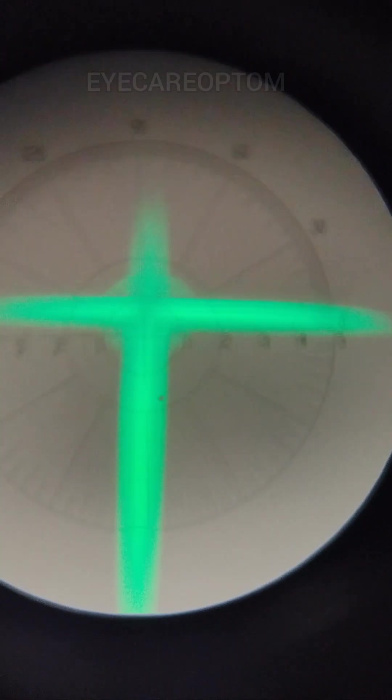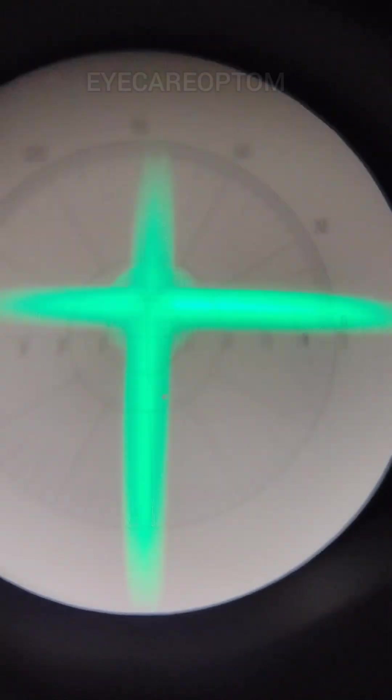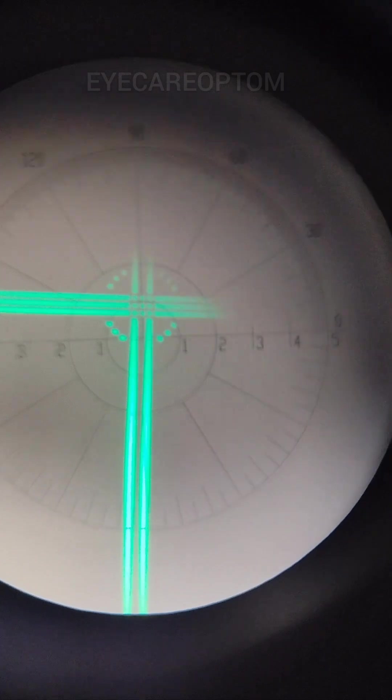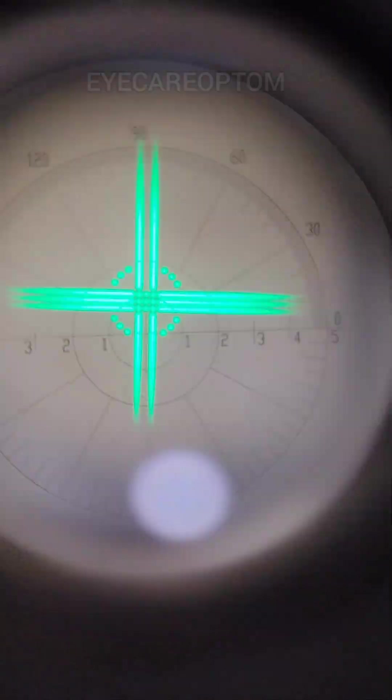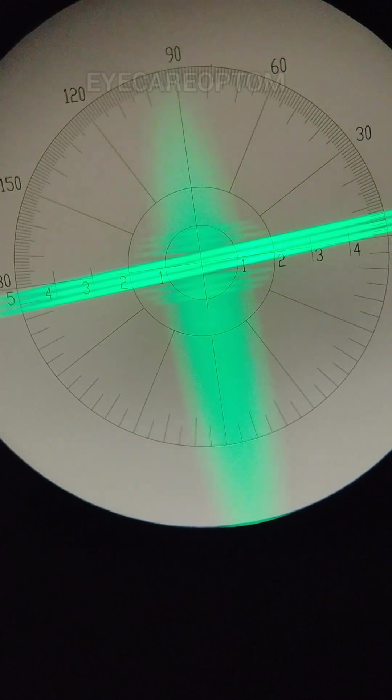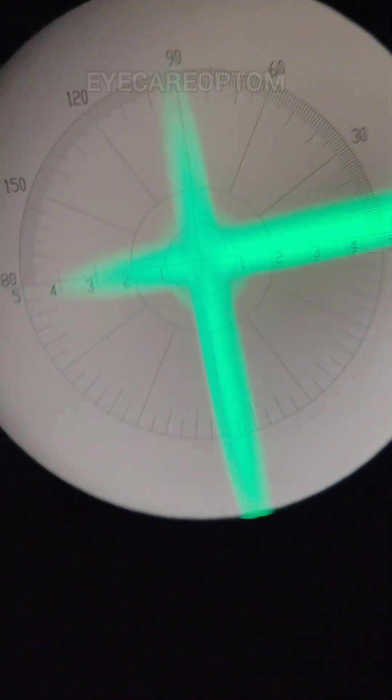Now these are blurred. Make these mires clear by rotating your power drum. Now both the axes are clear, so this is a spherical lens. Power is minus two diopters. Now see this mires - one axis is clear, another axis is blurred.